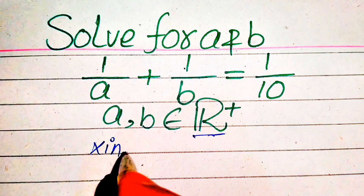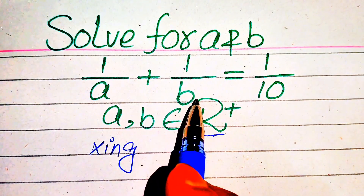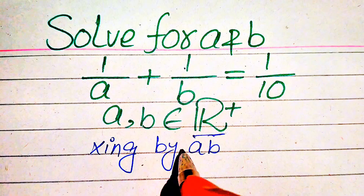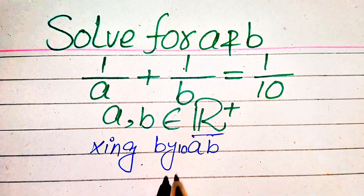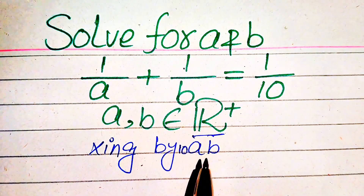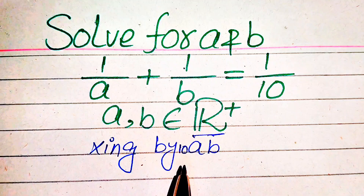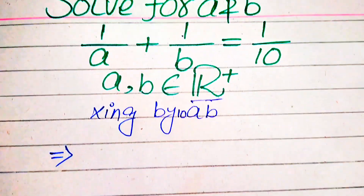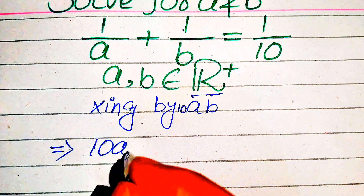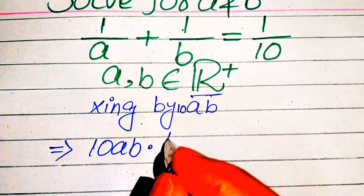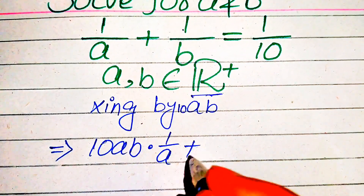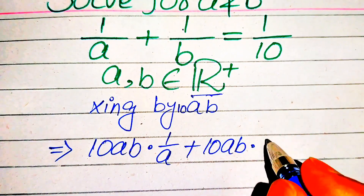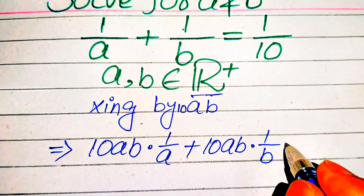The very first step is to multiply this equation on both sides by 10 times a and b. So when you multiply both sides by 10ab, our equation is written as 10ab multiplied by 1 over a, plus 10ab multiplied by 1 over b, equals 10ab multiplied by 1 over 10.